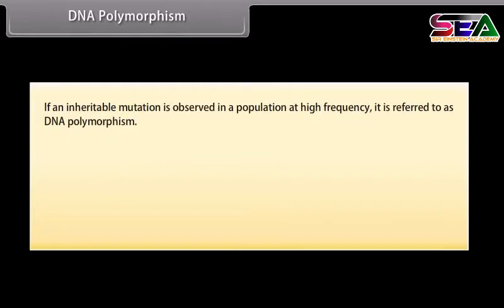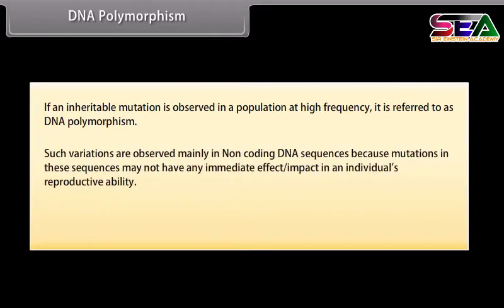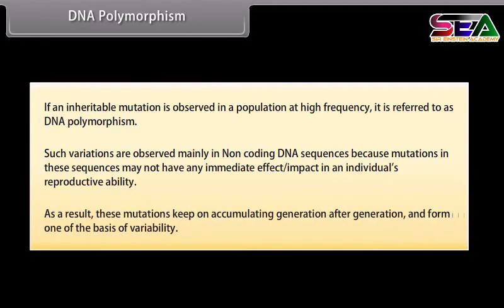If an inheritable mutation is observed in a population at high frequency, it is referred to as DNA polymorphism. Such variations are observed mainly in non-coding DNA sequences because mutations in these sequences may not have any immediate impact on an individual's reproductive ability. As a result, these mutations keep accumulating generation after generation and form one of the bases of variability.